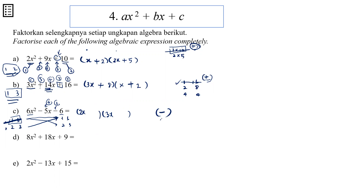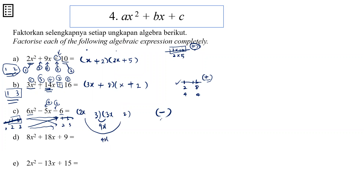Now 1 and 6 is out. Test with 2 and 3: put 2 here and 3 there. Inner pair: 2 times 3 is 6x. Outer pair is also 6x. 6x minus 6x gives 0 — not what I want. Swap to 3 and 2: inner pair is 9x, outer pair is 4x. And 9x minus 4x gives 5x — great, this is what I want! Now I want negative 5x, so the negative sign must go to the bigger term. Put negative here and positive there — so that's it. We have just factorized.